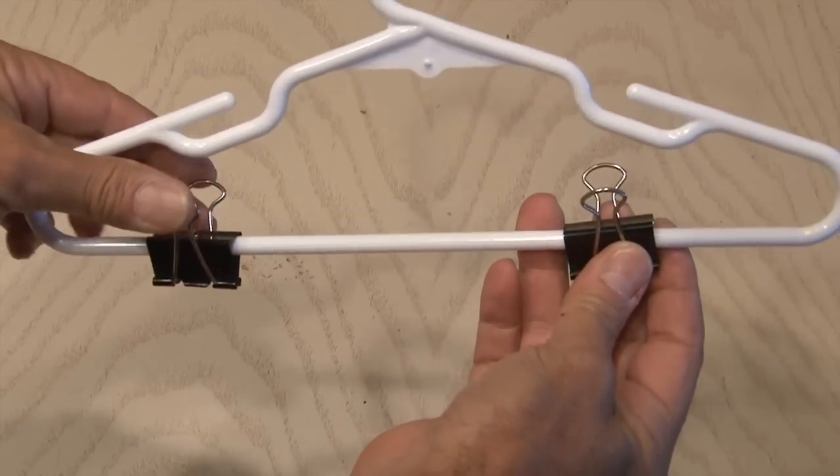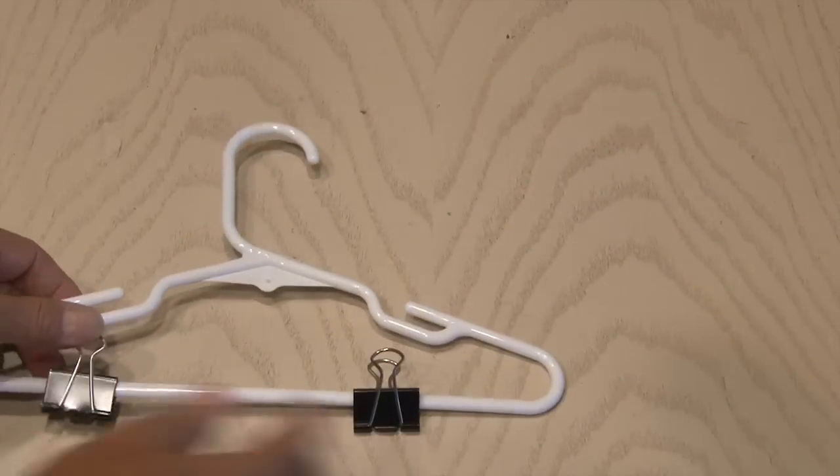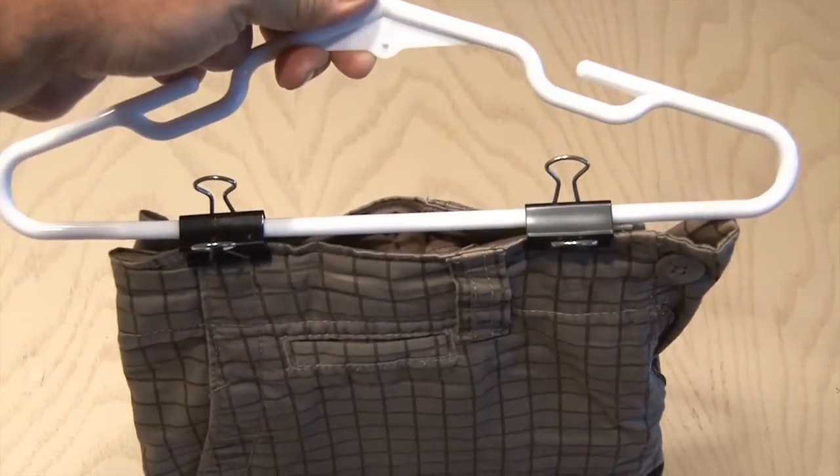To convert a regular clothes hanger to one that holds pants or shorts in place, just add two clips, and you're good to go.